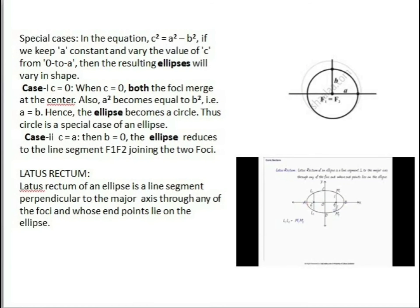Special cases of an ellipse: in the equation c² = a² − b², if we keep a fixed and vary c from 0 to a, the resulting ellipse will vary in shape. When c = 0, both foci merge together with the center, so a² = b², that is a = b, and the ellipse becomes a circle. Thus a circle is a special case of an ellipse. When c = a, then b = 0 and the ellipse reduces to the line segment f1f2 joining the two foci.